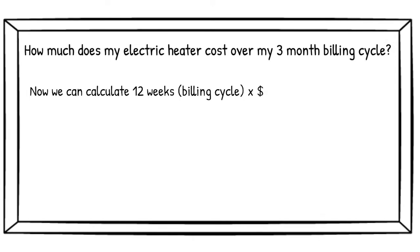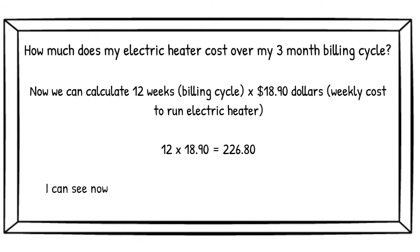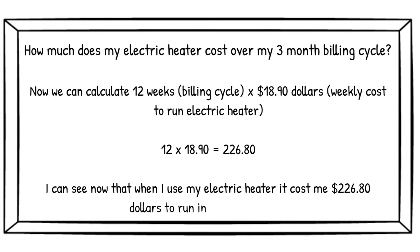We use the number of weeks and then we times that by the weekly cost that we calculated earlier. So in this case for my electric heater, it will be 12 times 18.90, which equals 226.80. So from this equation, I can see that my heater costs me $226.80 per billing cycle to run.